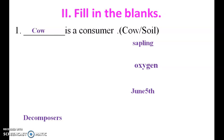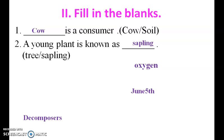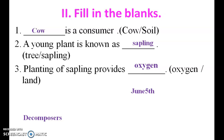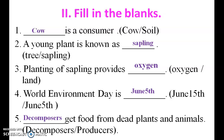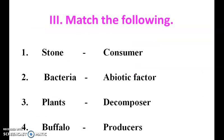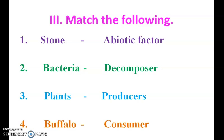The answer is cow, as cow is a consumer. A young plant is known as a sapling. Planting of saplings provides oxygen. World Environment Day is June 5th. Decomposers get food from dead plants and animals. Now let us see the match the following section.